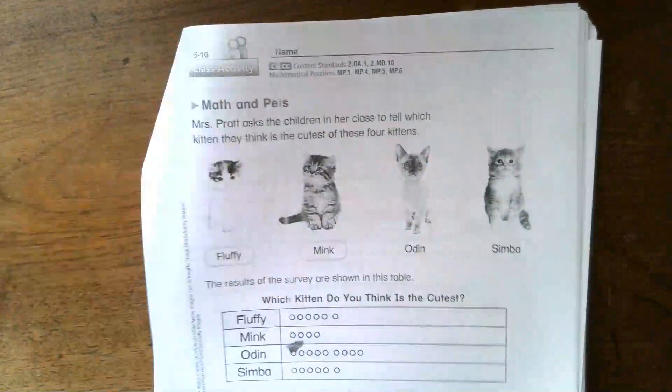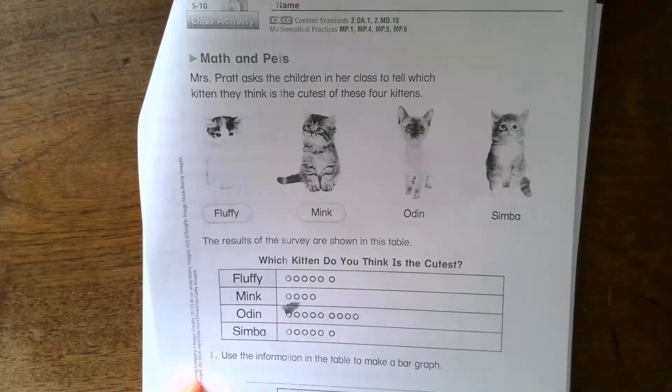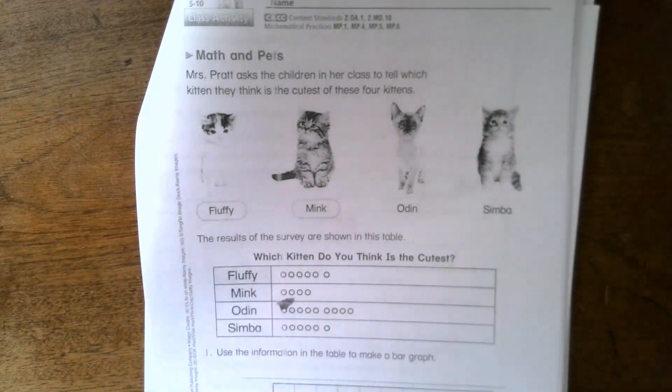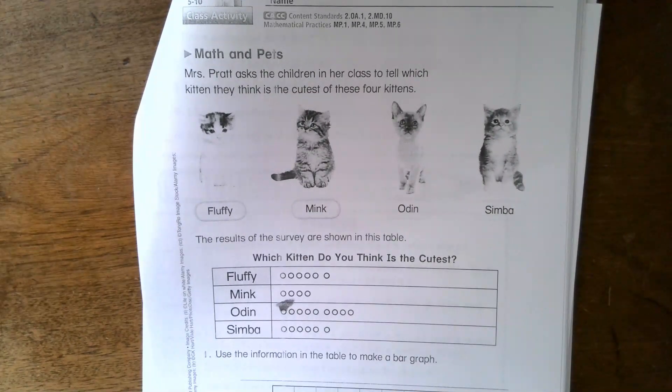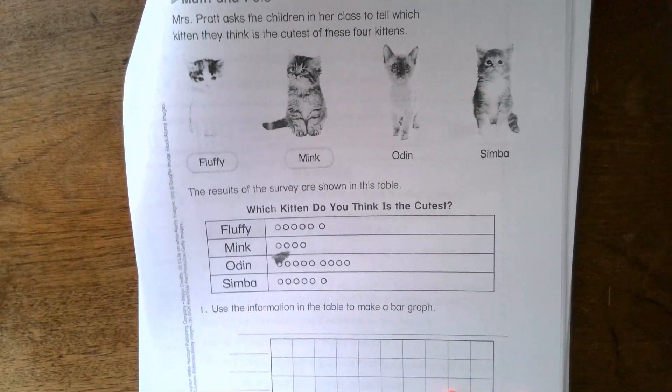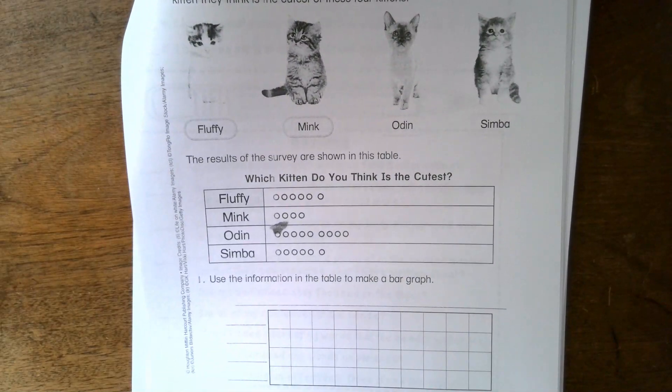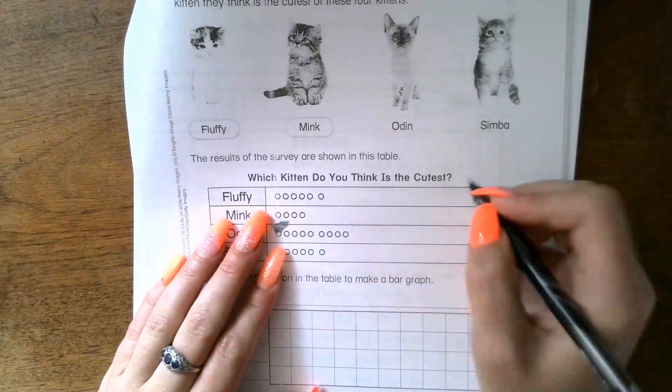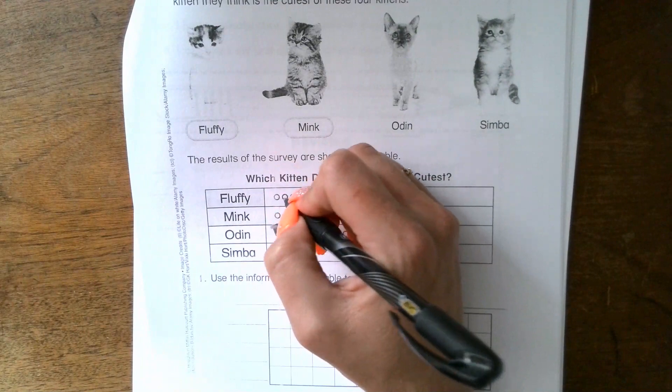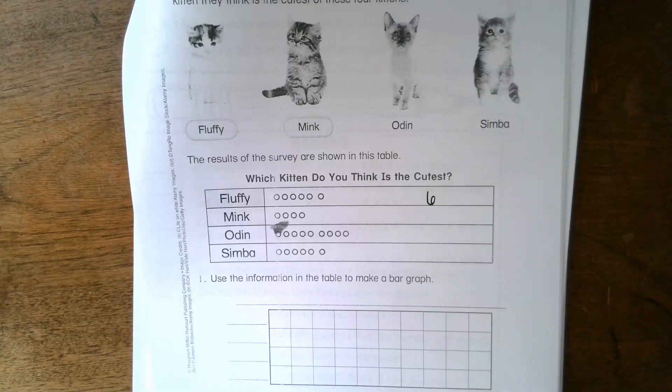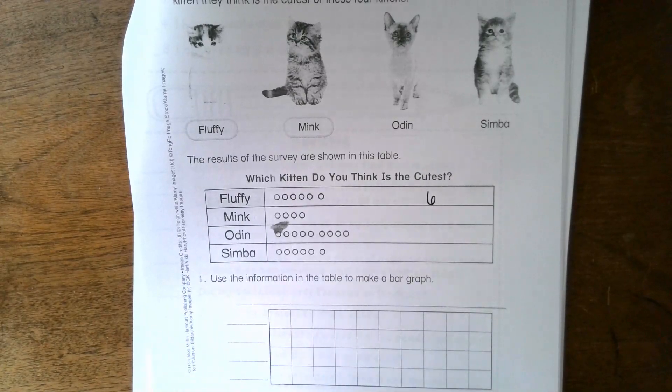We're going to come over to another page on using bar graphs. The top says 'Math and Pets.' Mrs. Pratt asks the children in her class to tell which kitten they think is the cutest of these four kittens. Now this time you have the results. Last time we were allowed to fake the results. The results of the survey are shown in this table. Just like we do with our bar graphs, even though these are tally marks, I would write this out before you even go to your questions: one, two, three, four, five, six. Just like I'm doing right here, you should do for the rest.